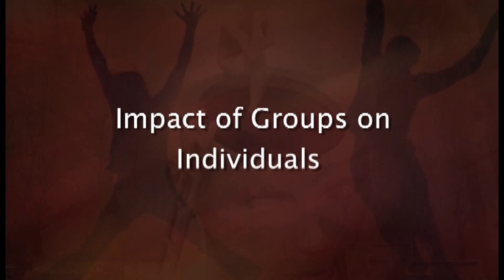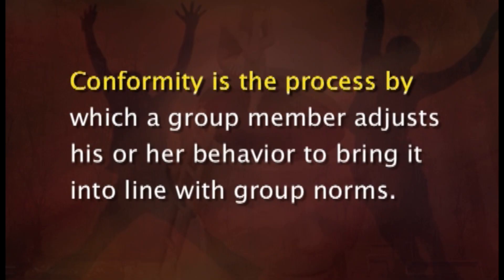The second core concern is the impact of groups on individuals. Individuals belong to many different groups such as families, work groups, seminars, and clubs, and spend many hours each week interacting with group members. Groups influence and regulate the behavior of their members typically by establishing norms or rules. One result of this is conformity — the process by which a group member adjusts his or her behavior to bring it into line with group norms.